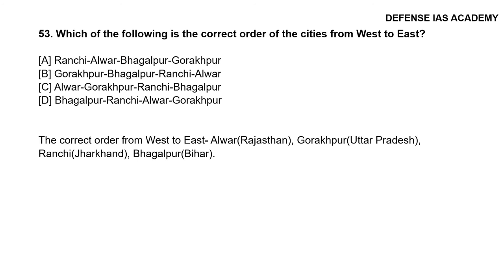Question 53: Which of the following is the correct order of the cities from west to east? The correct answer is option C: Alwar, Gorakhpur, Ranchi, Bhagalpur. The correct order from west to east is Alwar in Rajasthan, Gorakhpur in Uttar Pradesh, Ranchi in Jharkhand and Bhagalpur in Bihar.